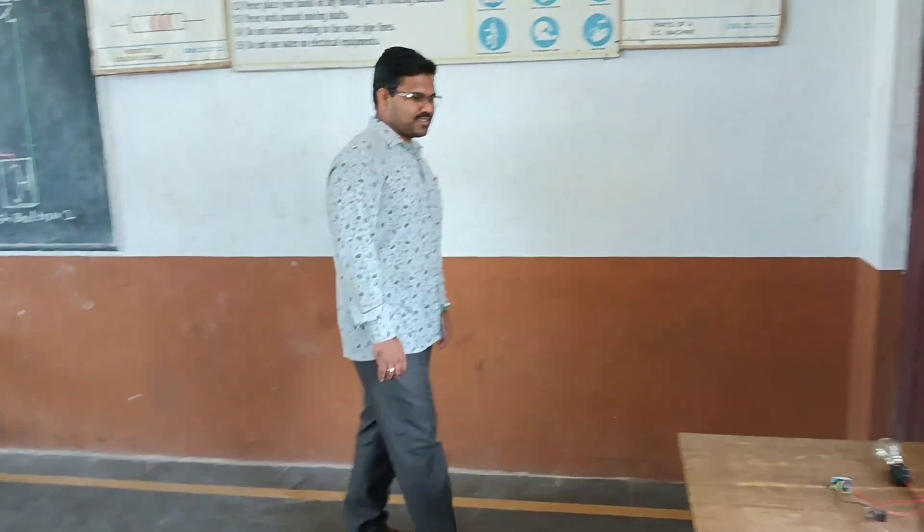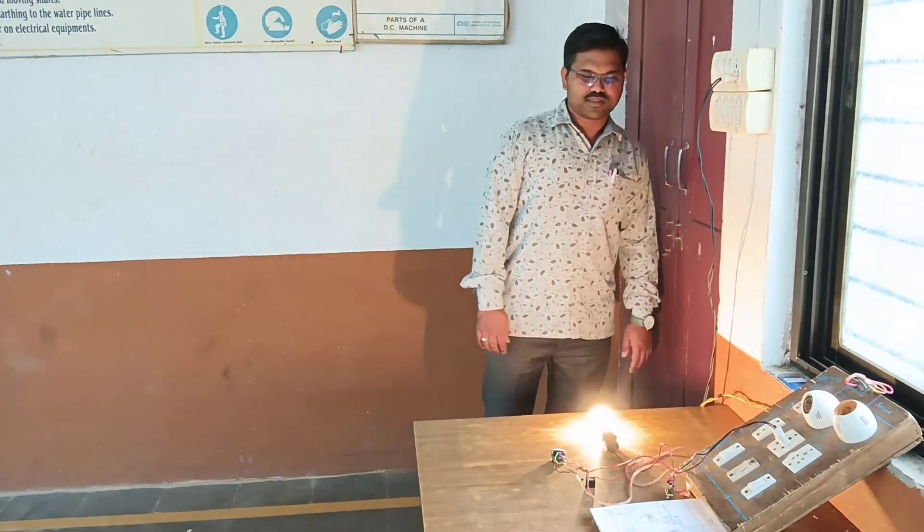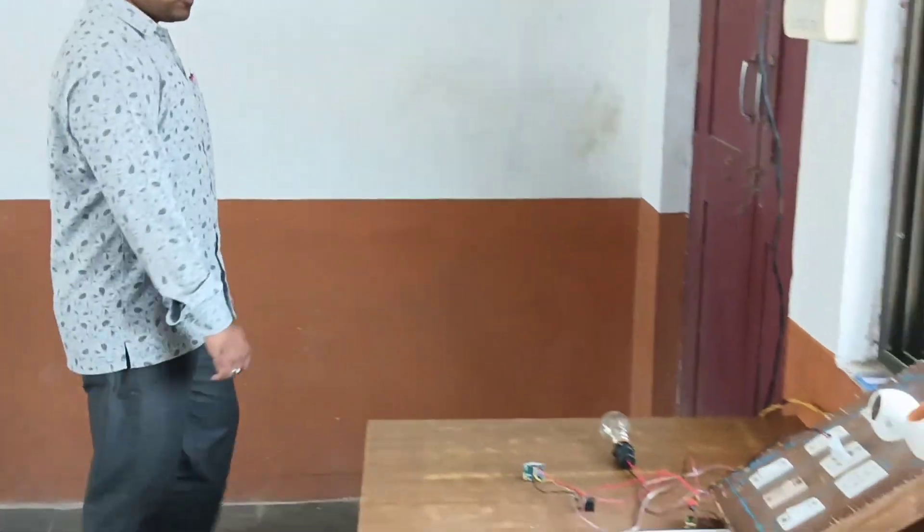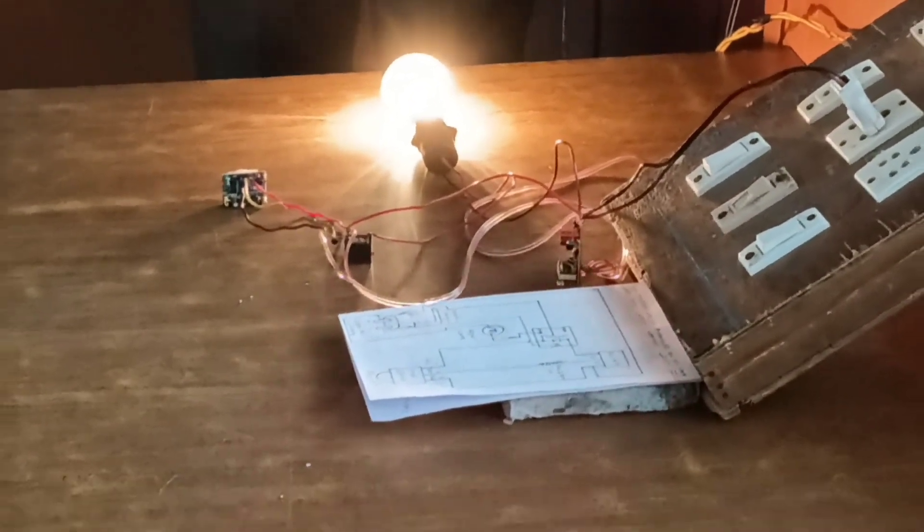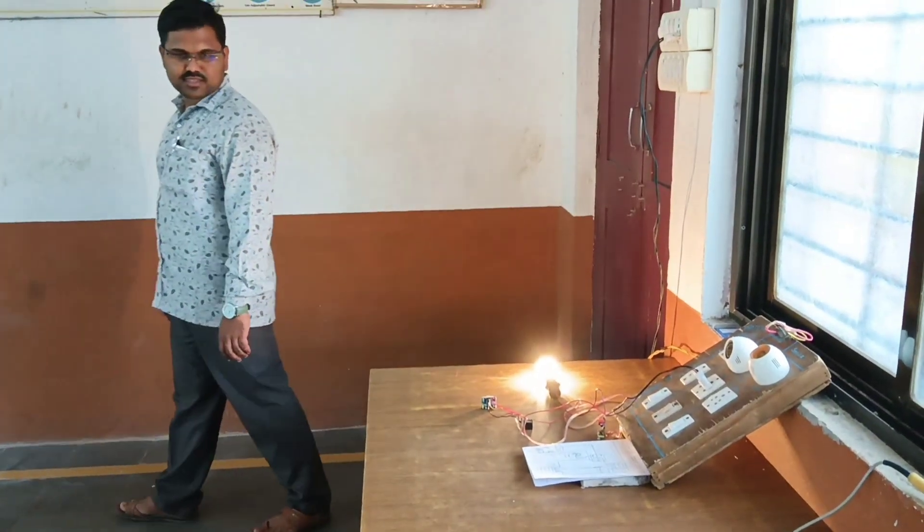You can see this is motion sensor circuit. From motion circuit, lamp is on, then go outside from sensor, lamp is off.